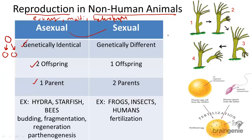in sexual reproduction, this occurs through fertilization, producing one genetically different offspring from two parents.